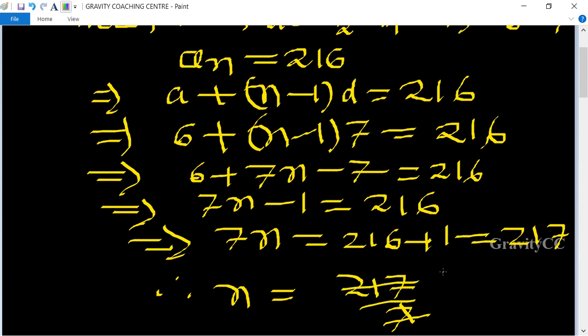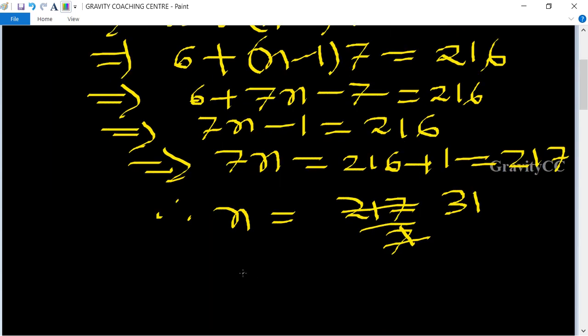So cancel by 7, 31 times 7 equal to 217, so n equal to 31. So this AP contains 31 terms.